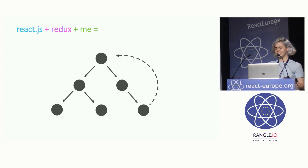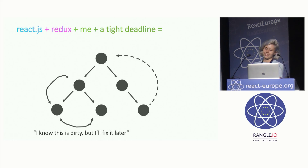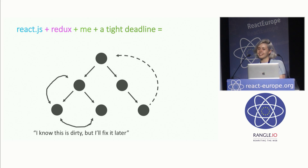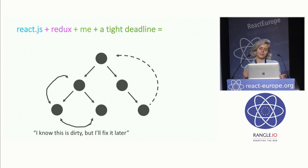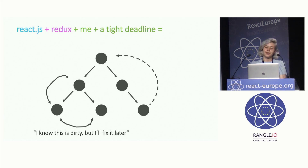And the thing that happened next is that I was under a tight deadline, and I started to do things that were not that pretty. You would mutate something, or communicate between components without going through the props. Have you guys ever done that before? But I was going to fix it after the release, which is fine, because it was working, so it was all good.